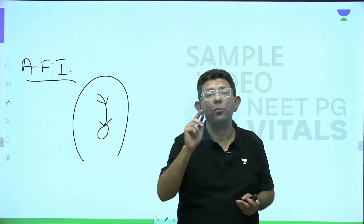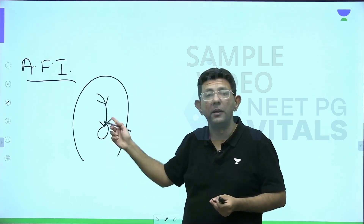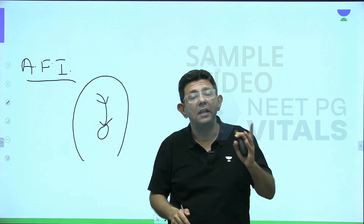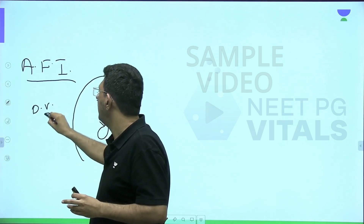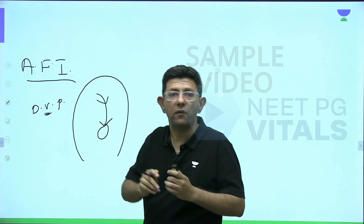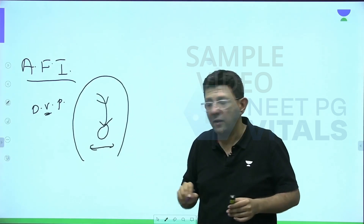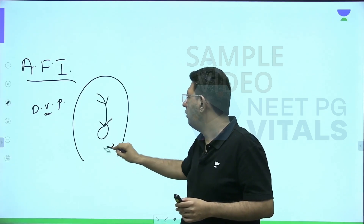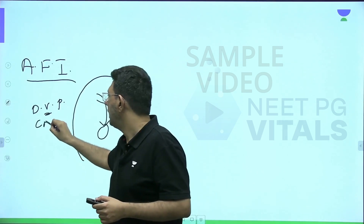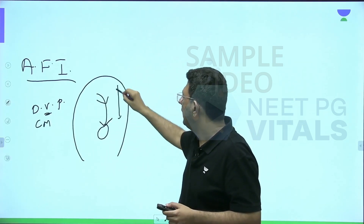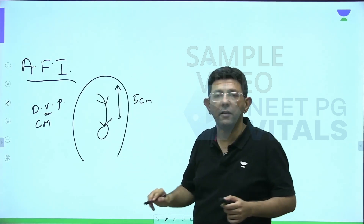In each quadrant, we are supposed to measure the deepest vertical pocket. Both words are important — they can give you image-based MCQs and ask you to calculate. We measure the deepest vertical pocket in centimeters. We cannot measure a horizontal pocket — only vertical. For example, in one quadrant I get a pocket of five centimeters.